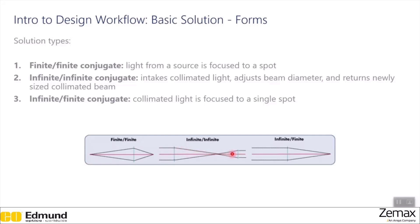For the third solution type, the infinite-finite conjugate, collimated light is focused to a single spot. The parallel light comes in from infinity and closes into a definitive endpoint.